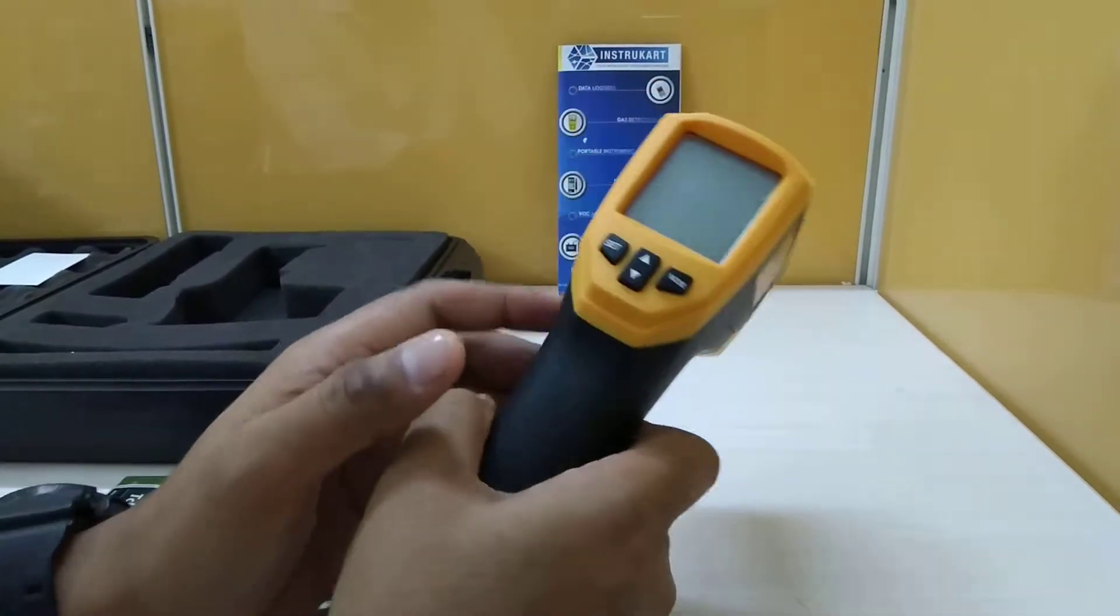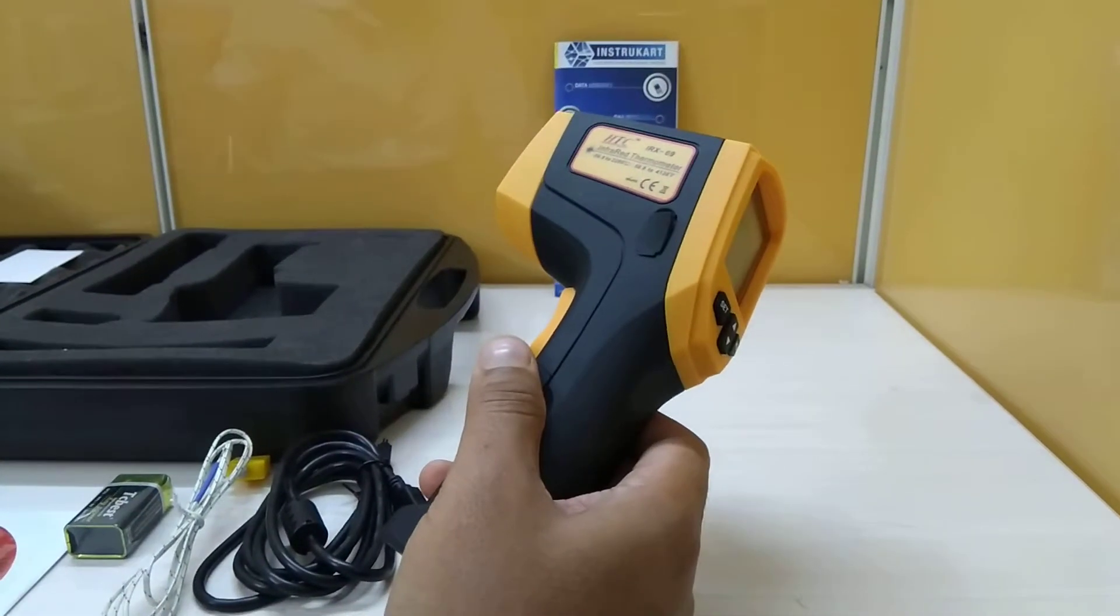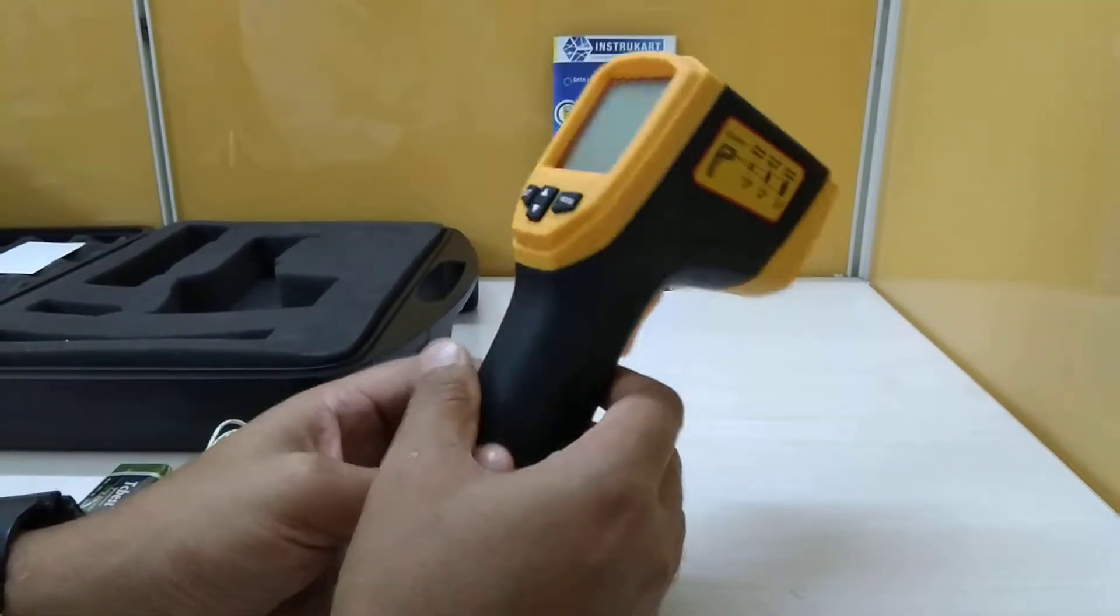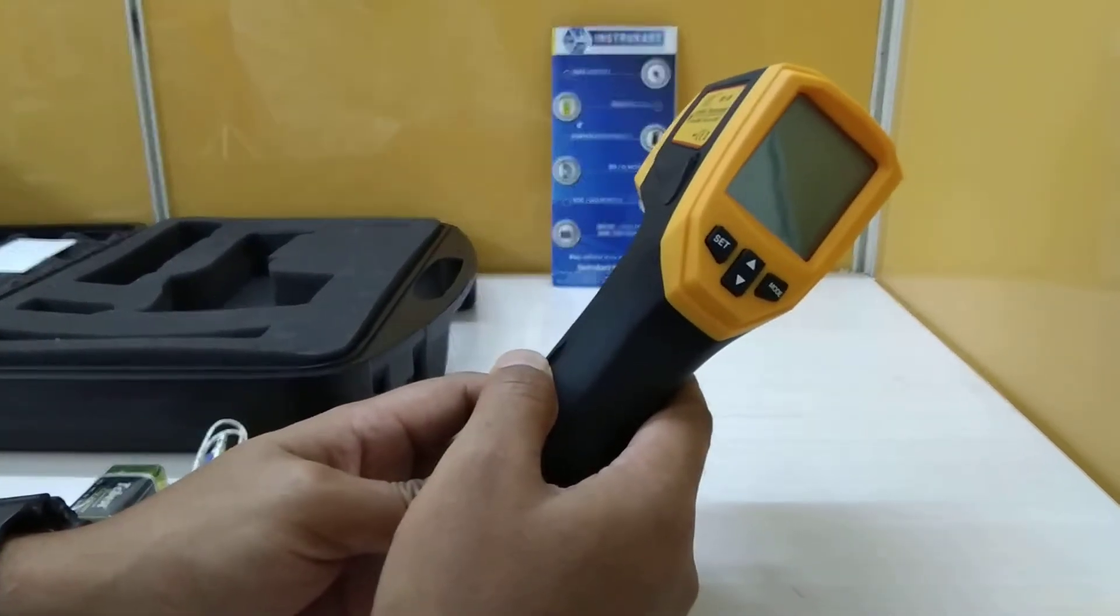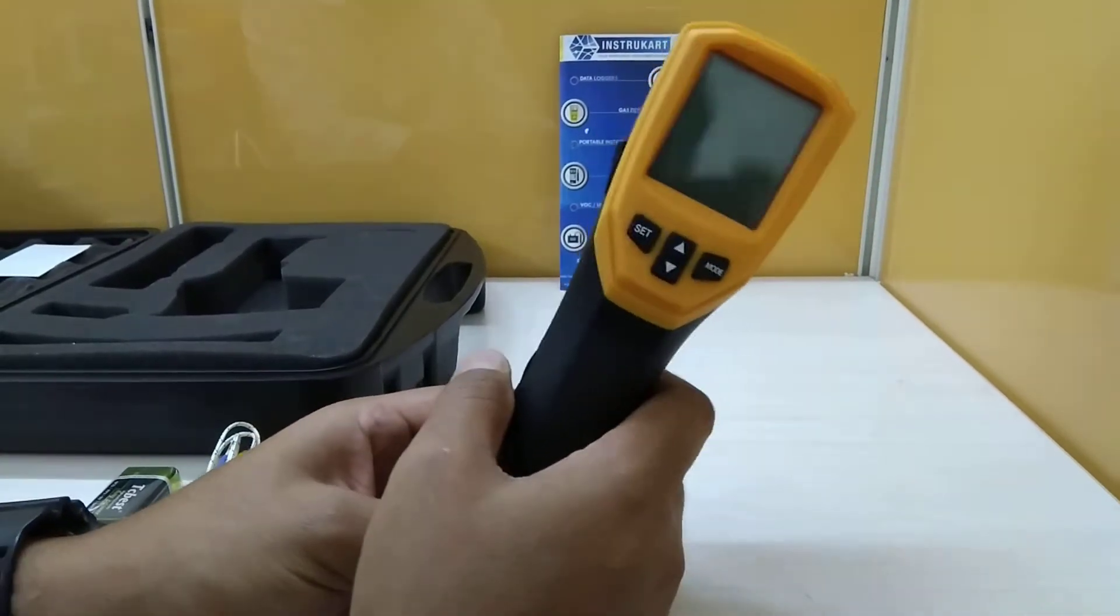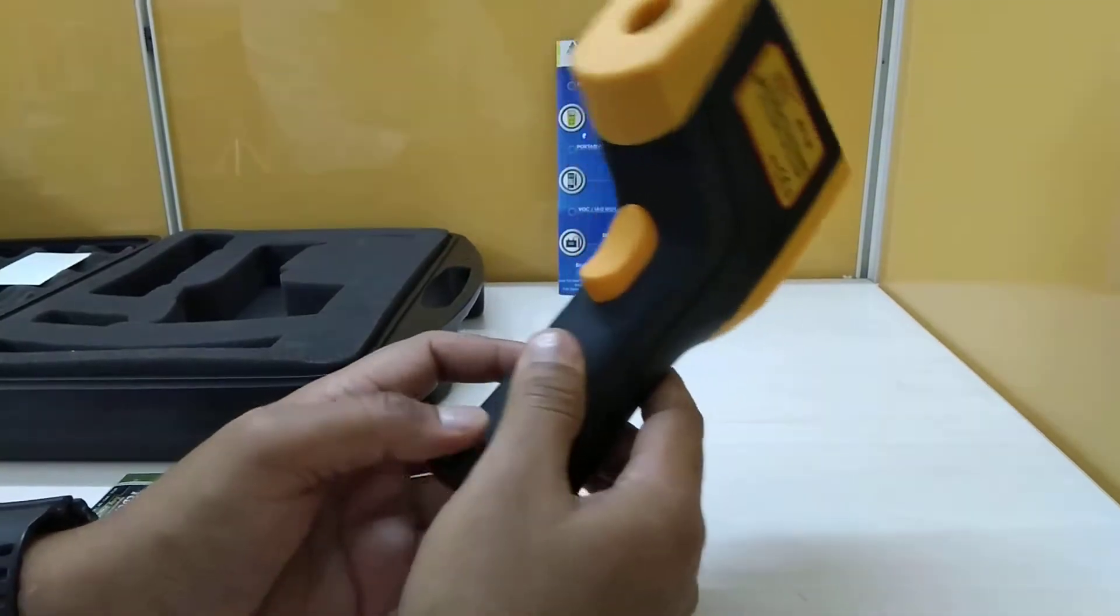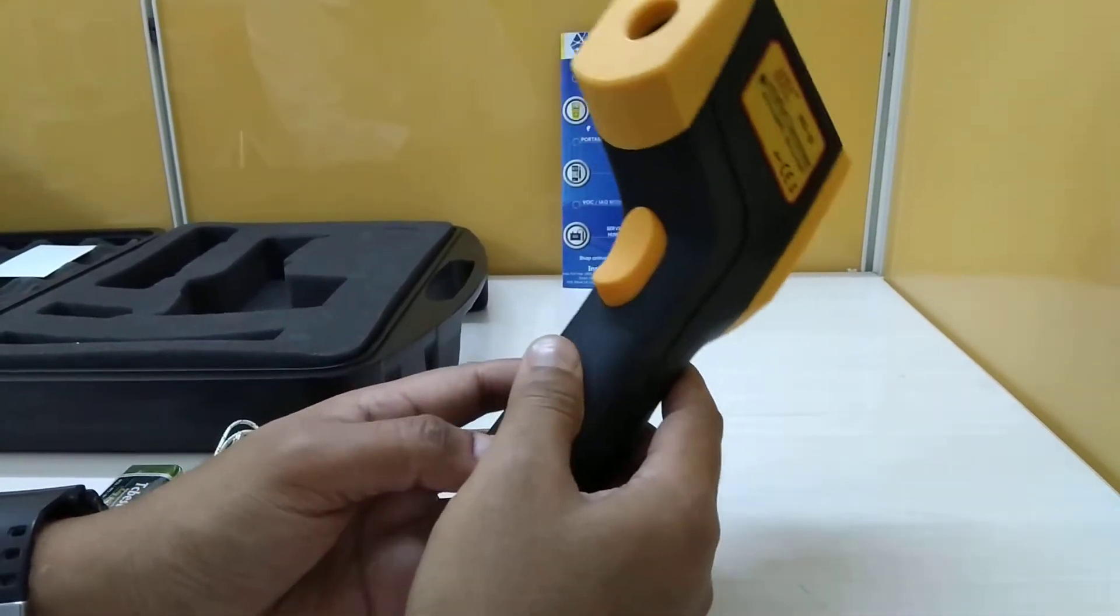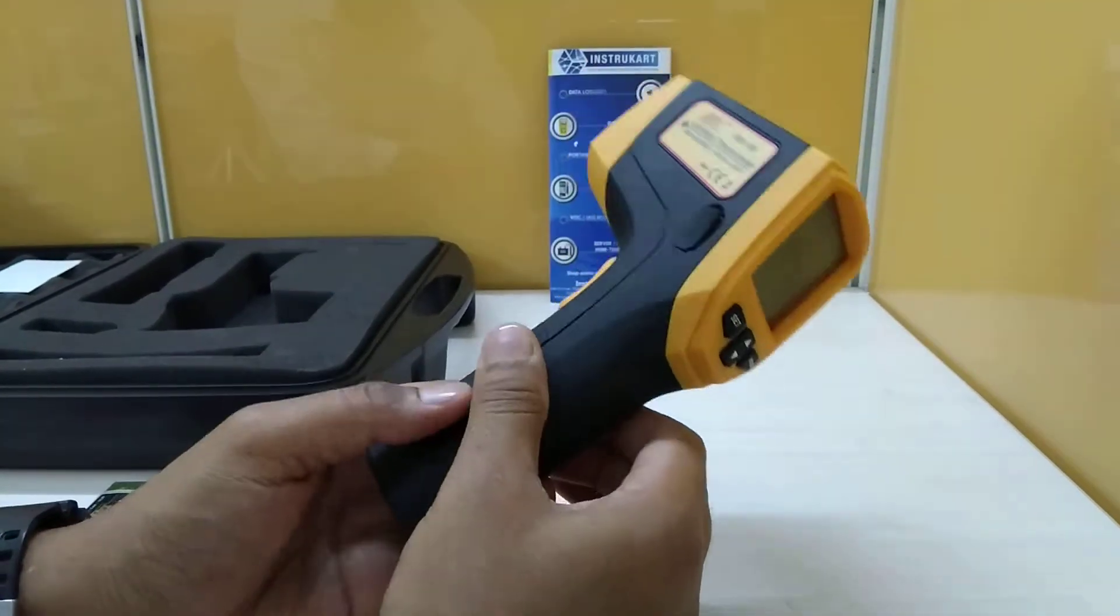Now this particular infrared thermometer has got an accuracy of plus or minus 4 degrees Celsius from minus 50 degrees to 0 degrees Celsius. Up to 500 degrees Celsius it has got an accuracy of 1.5 percent of reading, and above 500 degrees it has got plus or minus 2 percent of the reading.